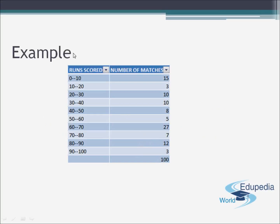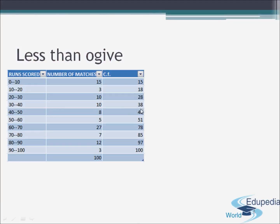Now let us have an example to plot the two types of ogives. Here, number of matches with the corresponding runs scored by a batsman are tabulated. Let us first talk about the less than type ogive. Since cumulative frequencies are involved, we first calculate the cumulative frequencies for the given table.